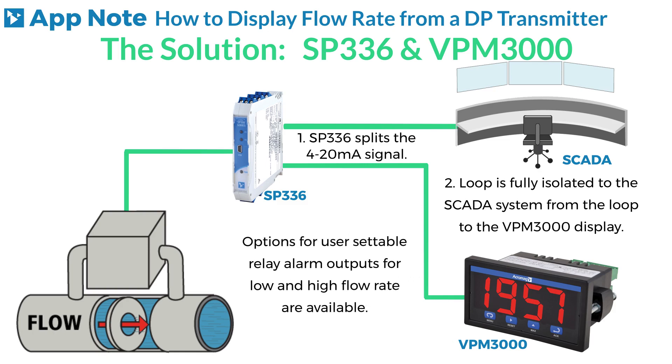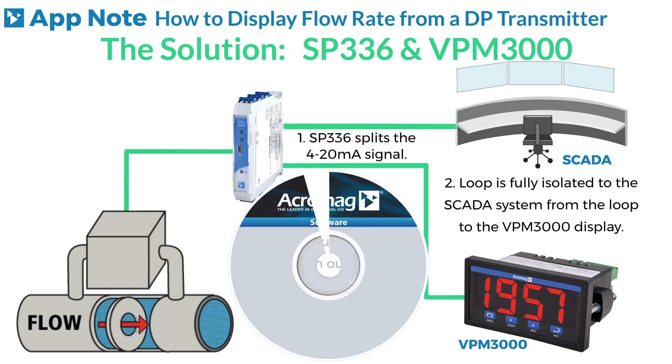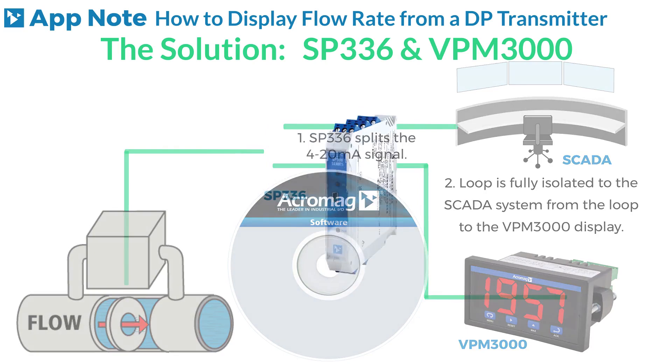Options for user-settable relay alarm outputs for low and high flow rate are available. Both units are easily configured with Acromag's free software.